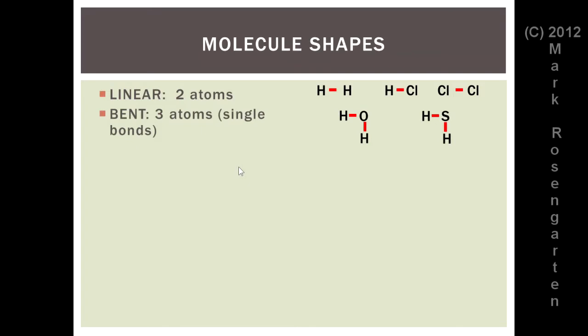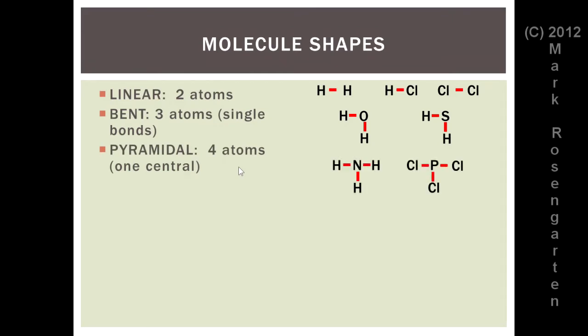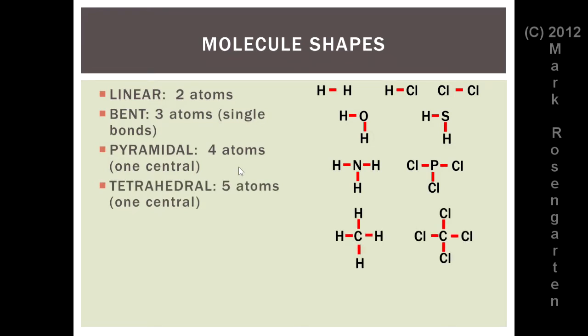Pyramidal molecules have four atoms, one in the center and three extending out in a pyramid shape. Ammonia and phosphorus trichloride each have a pyramidal shape. The tetrahedral shape has five atoms, one being central, as in methane and carbon tetrachloride.